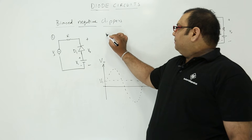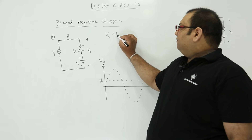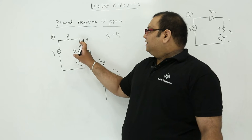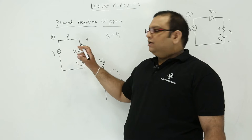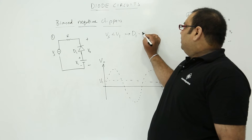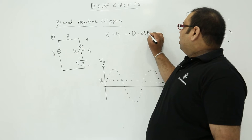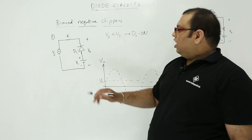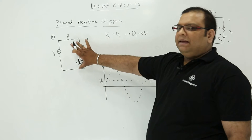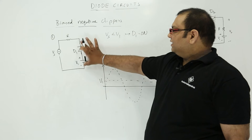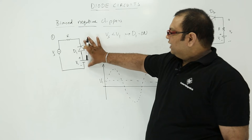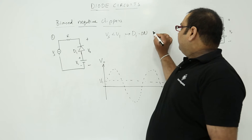When Vs is less than V1, what will happen? V1 is more and Vs is less than V1, so diode D1 will conduct. When diode D1 is in on state, this voltage will be the same as V1, because it is on. The diode is in on condition, so this voltage will be same as V1 — V0 is equal to V1.